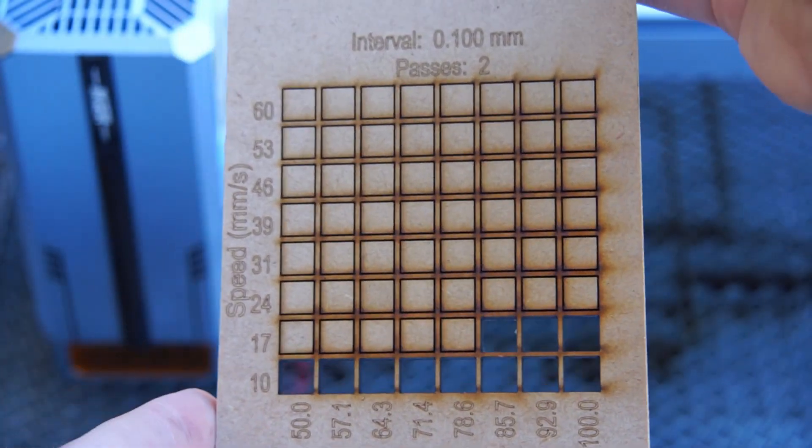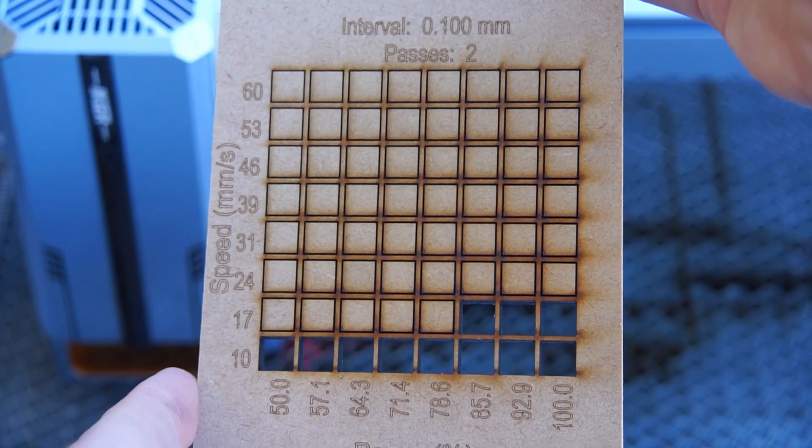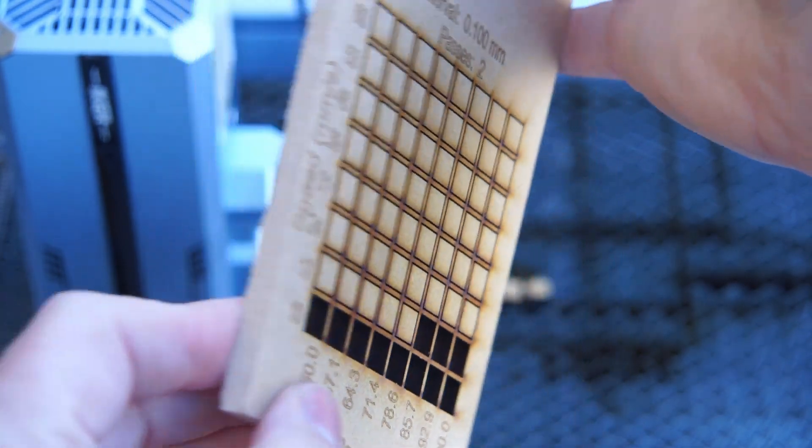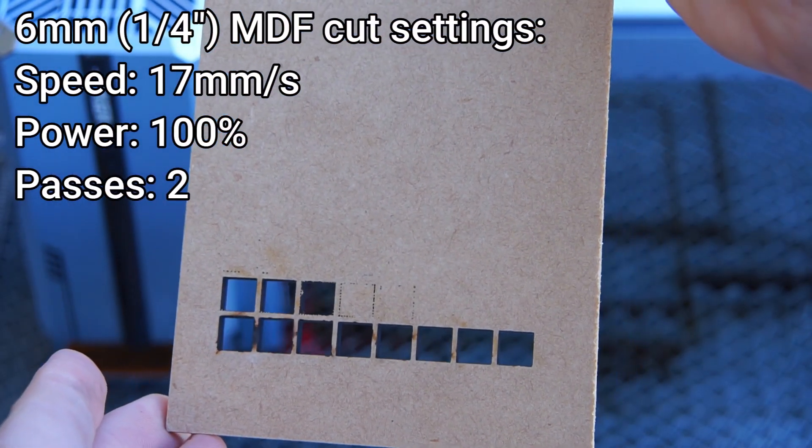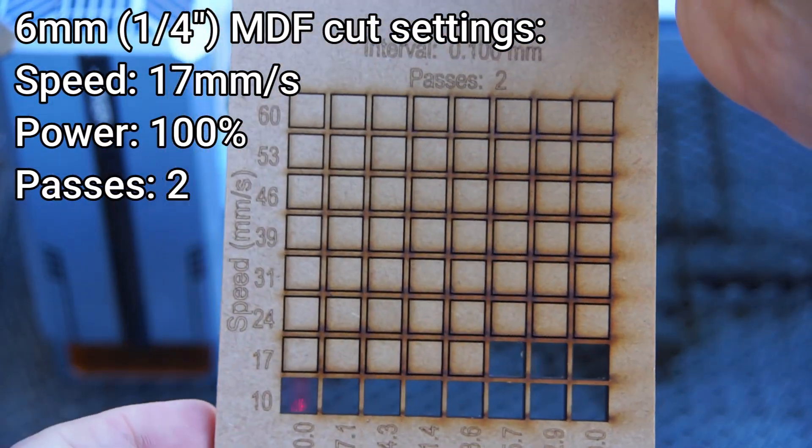Several squares were successfully cut all the way through. However, the cleanest and fastest option I would use is 17 millimeters a second at 100 percent power with two passes.